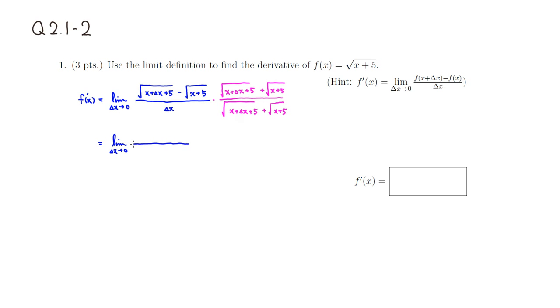we're going to get this limit as Δx approaches 0. So we have (a - b)(a + b) form, so we get a squared. So a² would be just without the square root here: x + Δx + 5, and b² would be just x + 5.